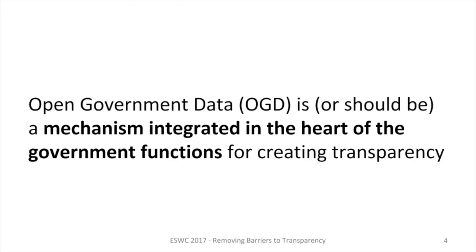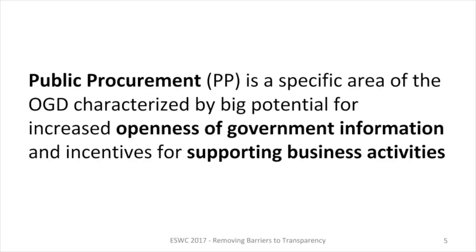Open government data is, or should be, a mechanism integrated in the heart of government functions for creating transparency. In this particular field, public procurement is a specific area characterized by a big potential for increased openness of government information and incentives for supporting business activities.